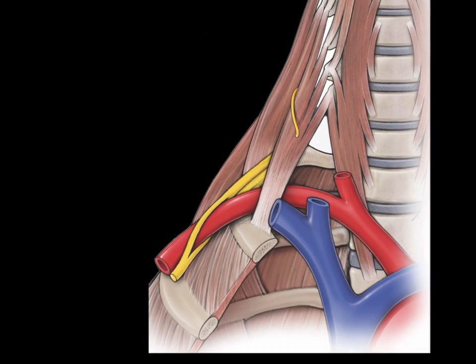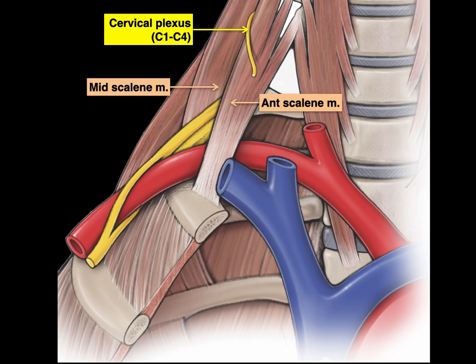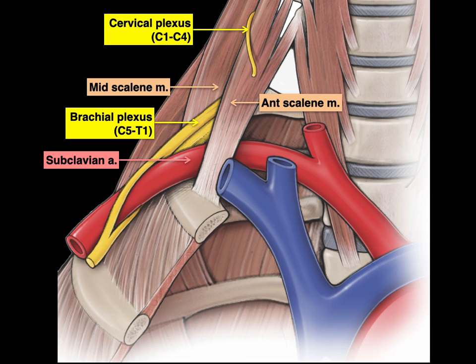Let's zoom in. There is our anterior and middle scalene — there become our mountain range and our Great Salt Lake. Between them we know that must be a branch of the cervical plexus — specifically, that's the phrenic nerve. And then that's the brachial plexus. Below that is the subclavian artery, and in front of the anterior scalene is the subclavian vein.